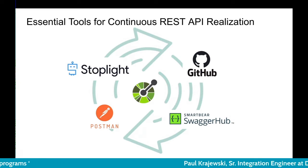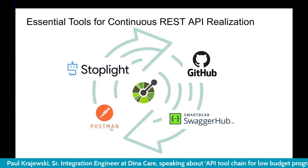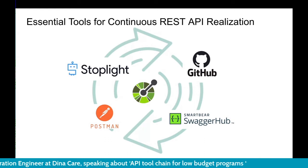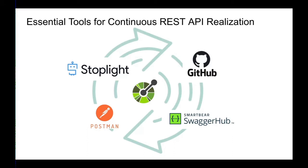The approach here is to use the OpenAPI Specification as the single source of truth, which gives us a lot of benefits. For this demo I'm going to show you how we can use the free versions of each of these tools to accomplish at least the beginning state of an API program. This is an iterative process — building and developing APIs is not a one-and-done thing.